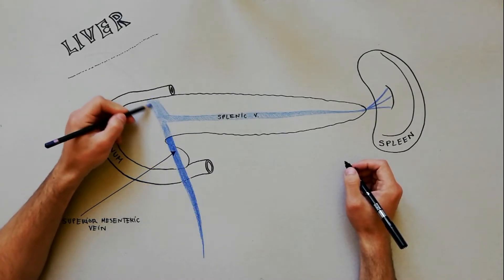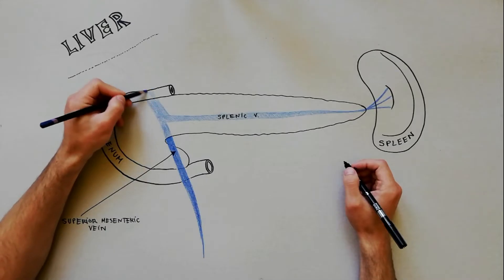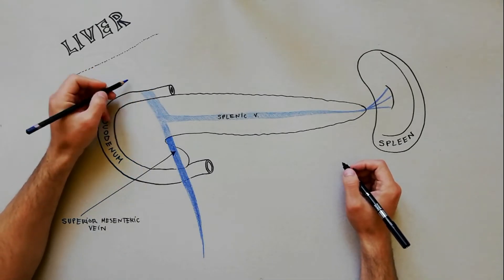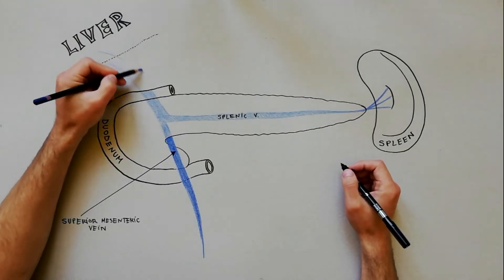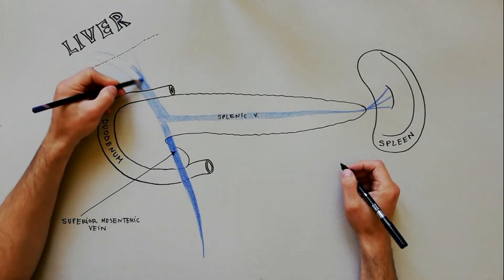After its formation, the portal vein ascends behind the neck of the pancreas, then ascends behind the first part of duodenum, to enter the right free edge of lesser omentum.